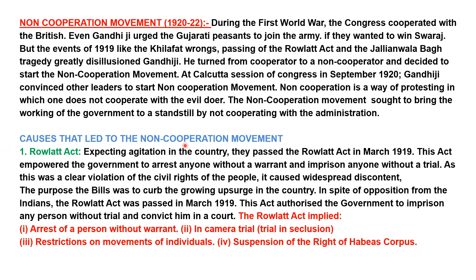The first cause that led to the non-cooperation movement was the Rowlatt Act. Expecting agitation in the country, the British government passed the Rowlatt Act in March 1919, which empowered the government to arrest anyone without a warrant and imprison anyone without a trial.